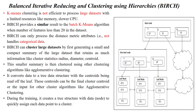Why do we need BIRCH? The k-means clustering algorithm is not handling large datasets efficiently because of the smallest memory and slower CPU configuration. BIRCH provides similar results to the batch k-means algorithm when the number of features are less than 20 in the given dataset.